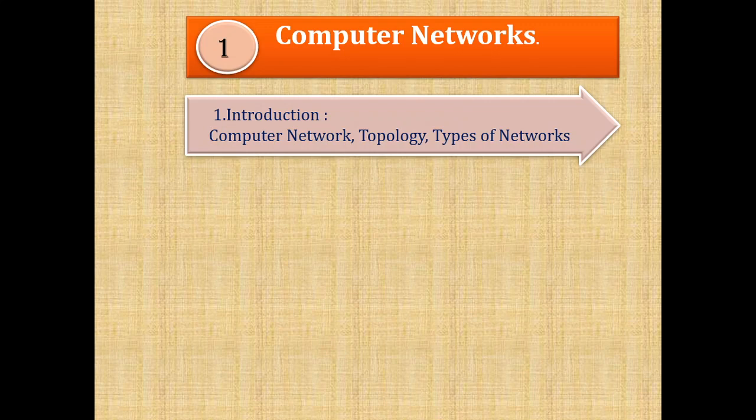The second term that we are going to study is Topology. Topology means the art of arrangement of computers in the Network. It has come from the Greek word Topos, meaning the art of arranging things. So how the computers in the network are arranged — what are the different ways they can be arranged — basically there are two types: Physical Topology and Logical Topology. We will discuss these in detail in our next sessions.